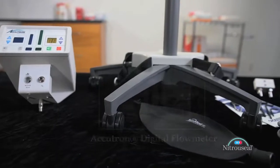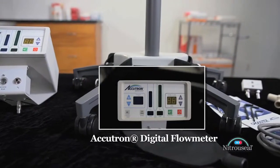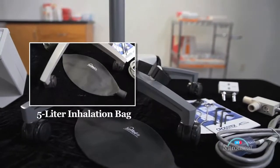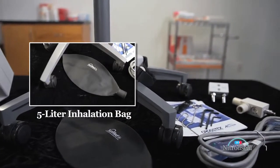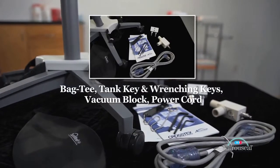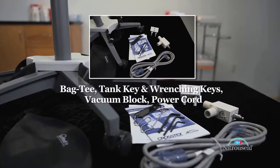Your NitroSeal system will arrive at your location in three separate containers, each containing an essential component. The large box contains the Accutron digital flow meter, the mobile stand with a four-tank manifold bracket, and accessories including a 5-liter inhalation bag, bag T, tank key and wrenching keys, a remote vacuum block, and an electrical power cord.